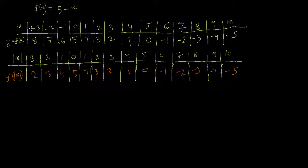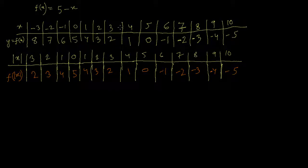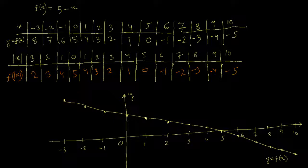Looking at the table, if we had minus 3 giving y equals 8 before, the absolute value of x completely removes the negative sign, so it becomes 3, and the y value for x equals 3 is 2. Previously minus 2 gave y equals 7 because 5 minus minus 2 is 7, but with absolute value of x, minus 2 becomes 2, so y is now 3. So the values of x that are affected are just taking the same y values as the corresponding positive values of x.